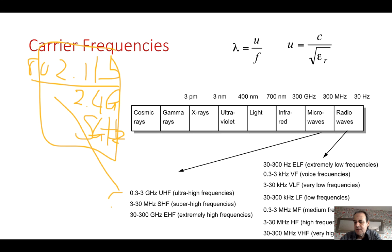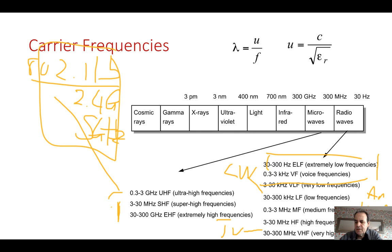Below UHF we find TV and FM radio bands. Further down are long-wave radio and very low frequencies. Above UHF we enter the millimeter wave region, which is used typically for line-of-sight communications.